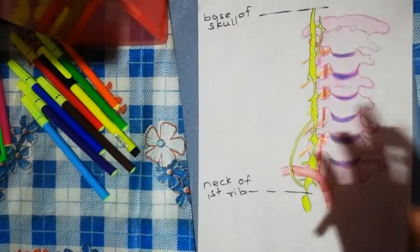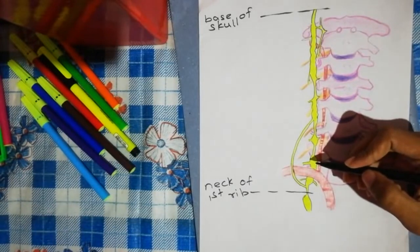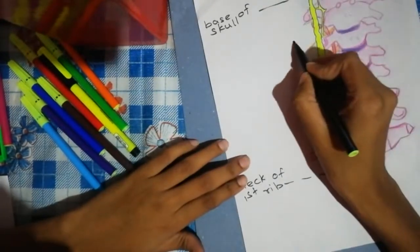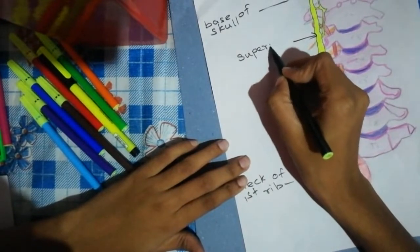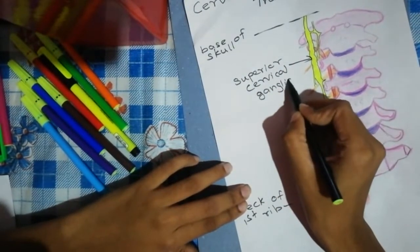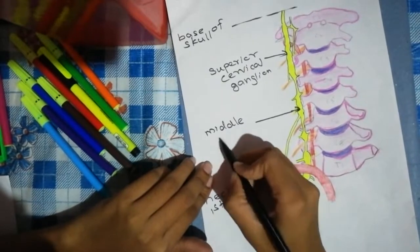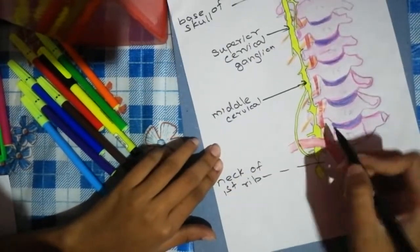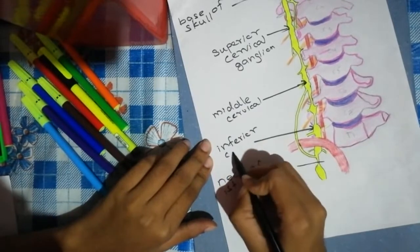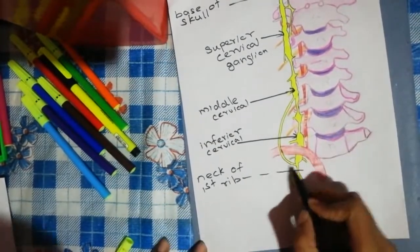The cervical sympathetic trunk contains three ganglia. The superior cervical ganglion is the largest of the three. Below it is the middle cervical ganglion, and further below is the inferior cervical ganglion.